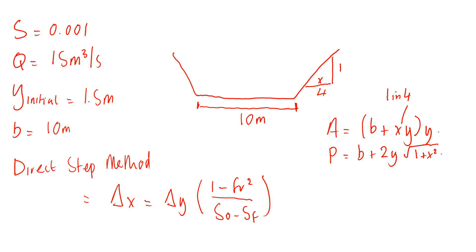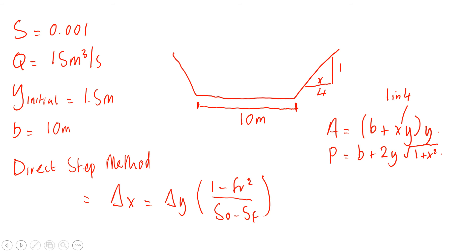So that's the information you're given. Now you can go ahead and start compiling your table. Because it only requires one iteration, you only need to do one step. First we've got x and y. We're going to start at x = 0, and y = 1.5.